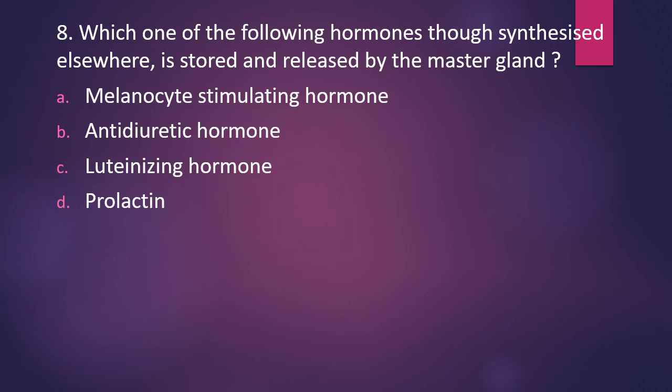Question number eight: which one of the following hormones, though synthesized elsewhere, is stored and released by the master gland? Options: melanocyte stimulating hormone, antidiuretic hormone, luteinizing hormone, or prolactin. The correct answer is option B, antidiuretic hormone. The master gland here is the pituitary gland. Antidiuretic hormone is synthesized by the hypothalamus but stored and released by the pituitary. Similarly, oxytocin — also called vasopressin — and antidiuretic hormone are both synthesized by the hypothalamus but stored and released by the pituitary.